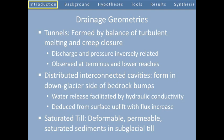The first of these are subglacial tunnels. Tunnels are formed as a balance of melting due to turbulent water flow and creep closure due to ice deformation. In these subglacial conduits, the discharge of water and the pressure in that water are inversely related.